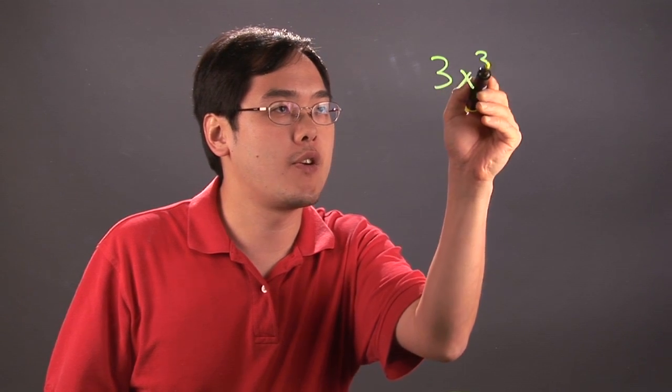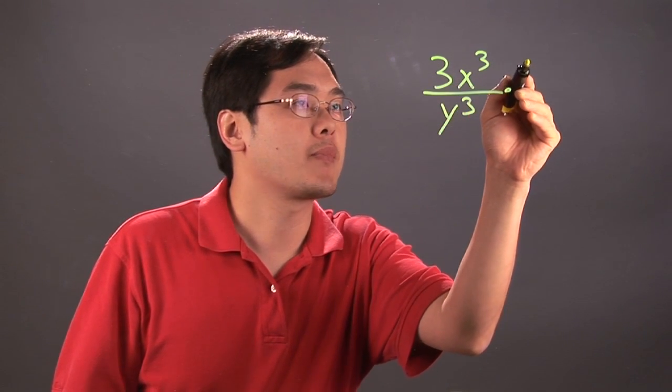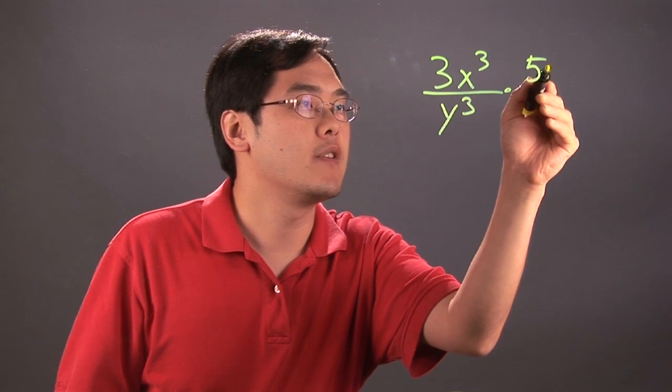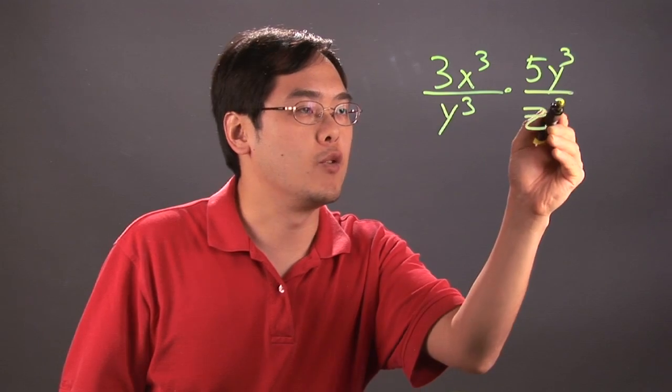So if you have fractions that have whole numbers and cubes, you'll have for example 3x to the third over y cubed times 5y to the third over z cubed.